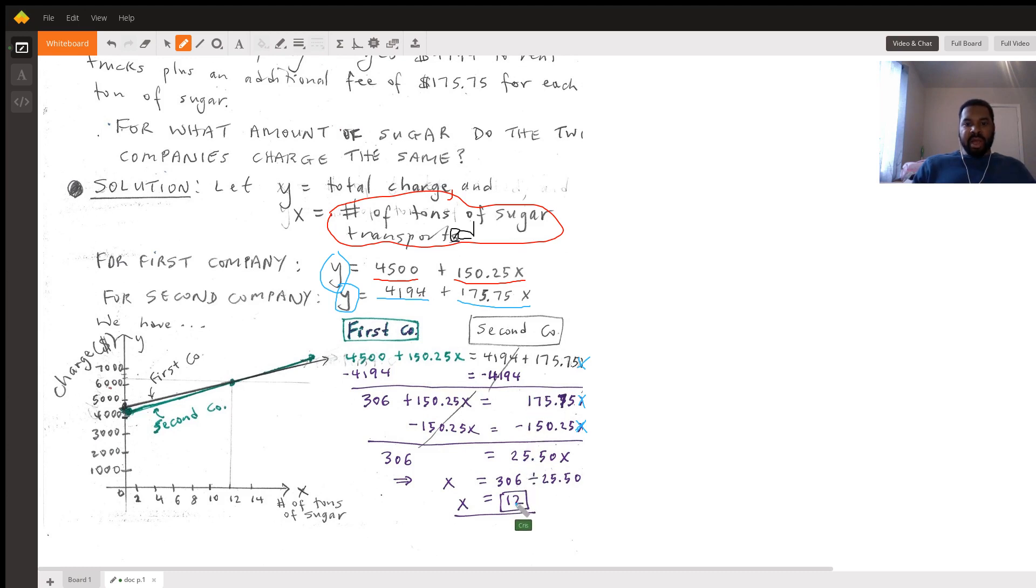So for 12 tons of sugar transported, the cost would be the same. Each company would be charging the same amount if you're transporting 12 tons of sugar.